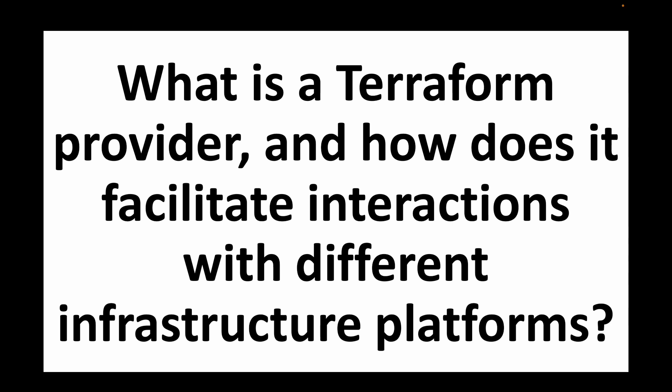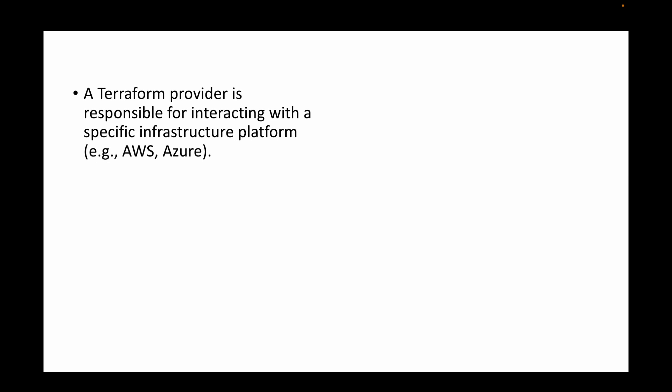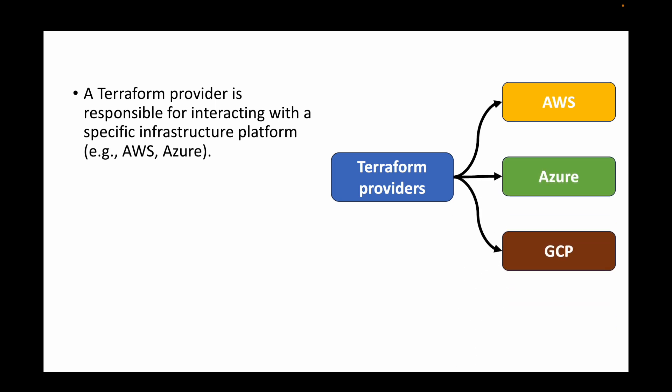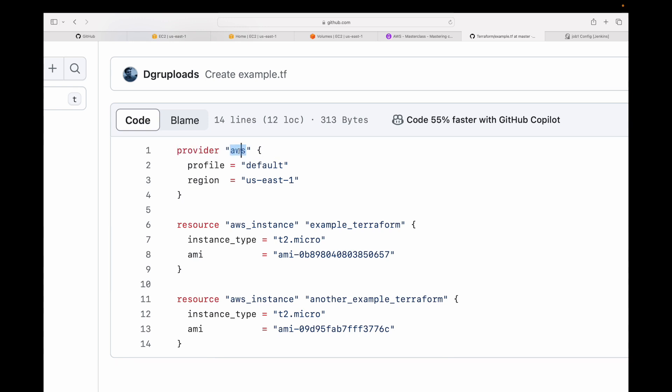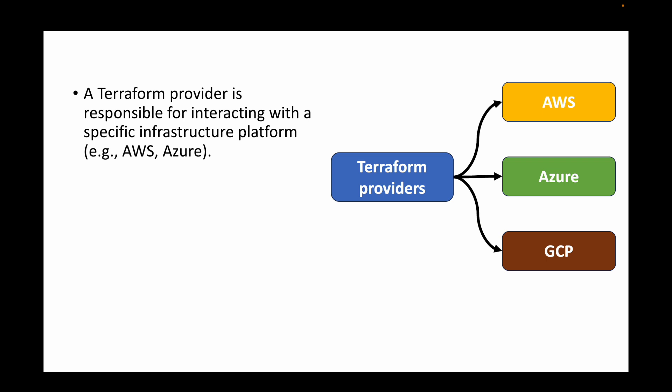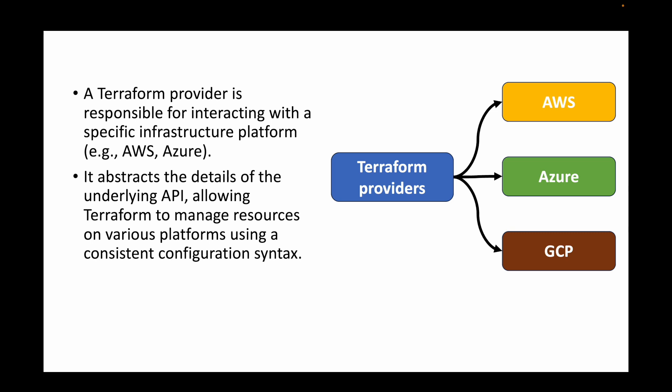The next question is: what is a Terraform provider and how does it facilitate interactions with different infrastructure platforms? A Terraform provider is what we use to specify the platform where we want to create our infrastructure — AWS, Azure, GCP, etc. For example, defining a provider as AWS tells Terraform to create the infrastructure on the AWS platform. The provider block abstracts the details of the underlying API, allowing Terraform to manage resources on various platforms using a consistent configuration syntax.